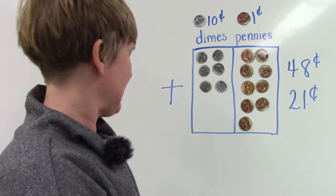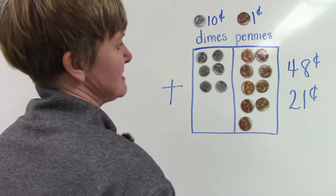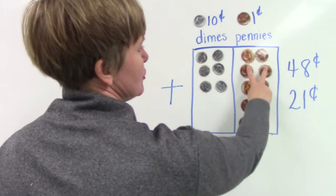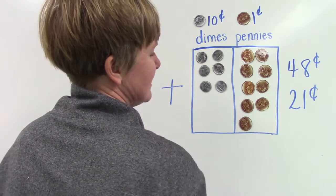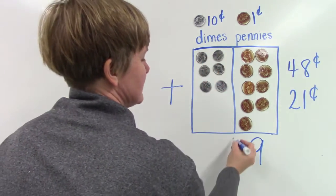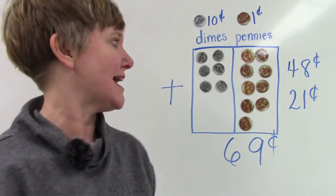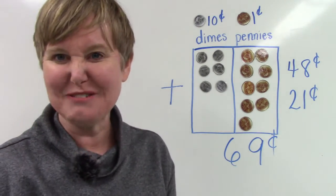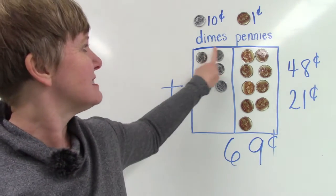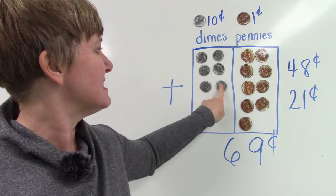Let's add these together. How many pennies do I have? 2, 4, 6, 8, one more - that's 9. 2, 4, 6 [dimes]. 48 plus 21 equals 69 cents.